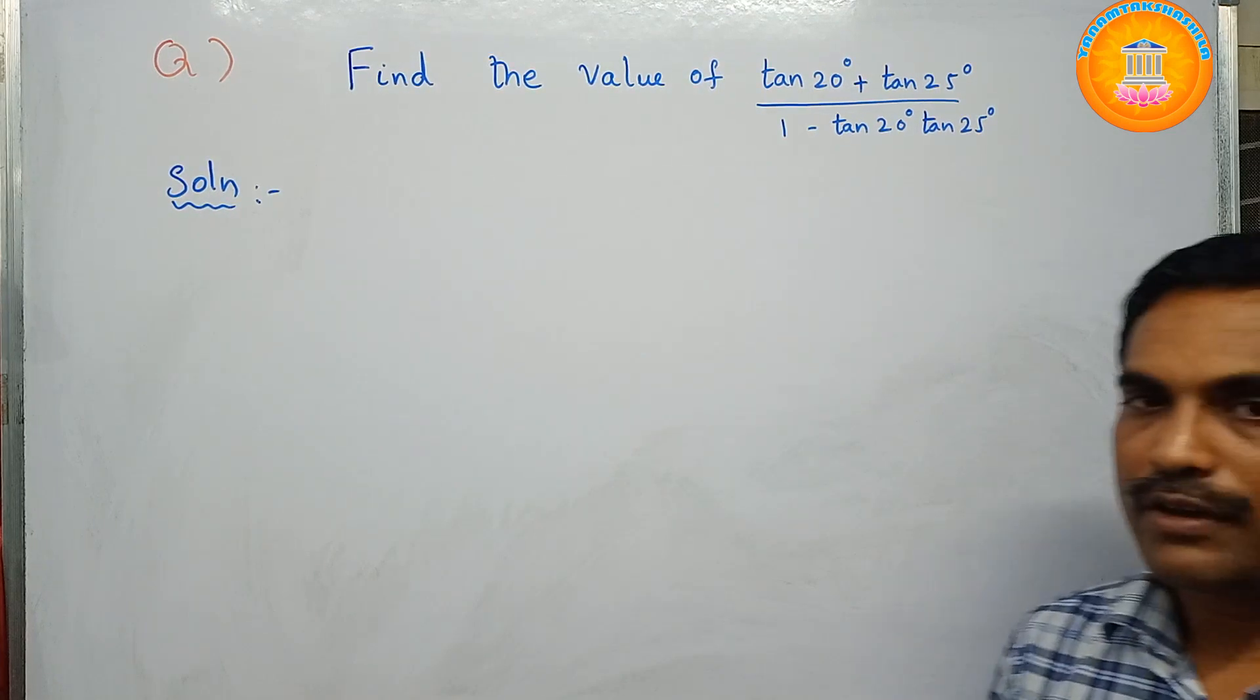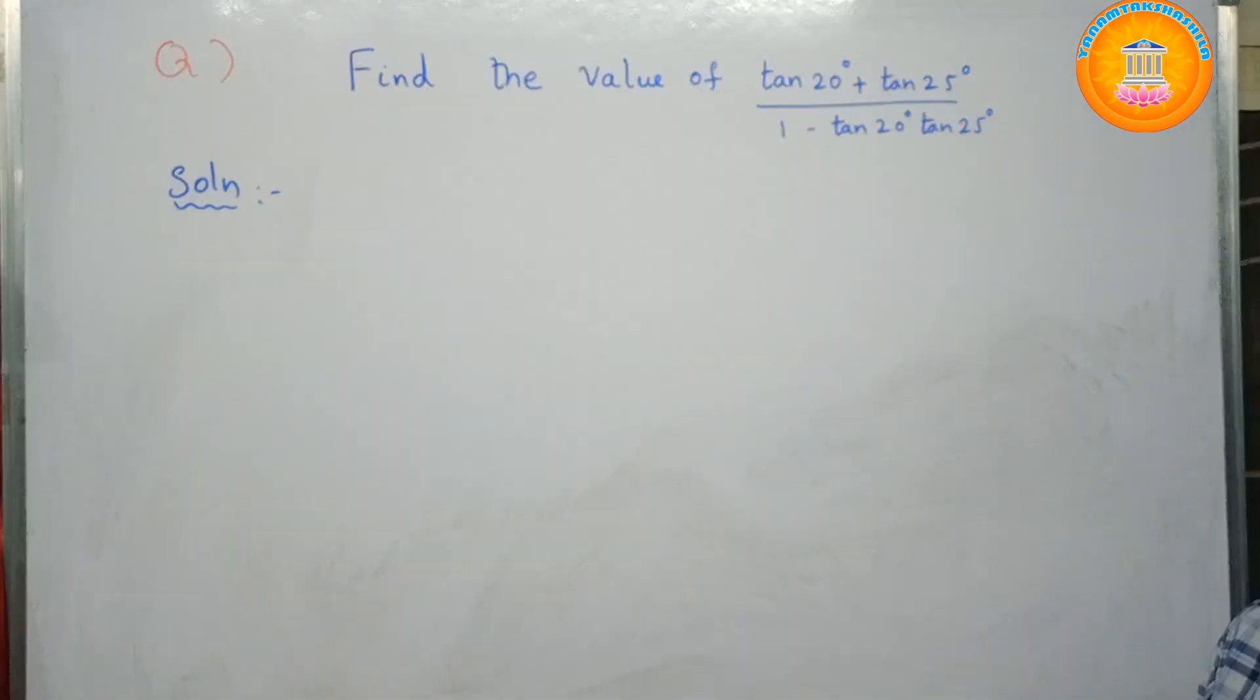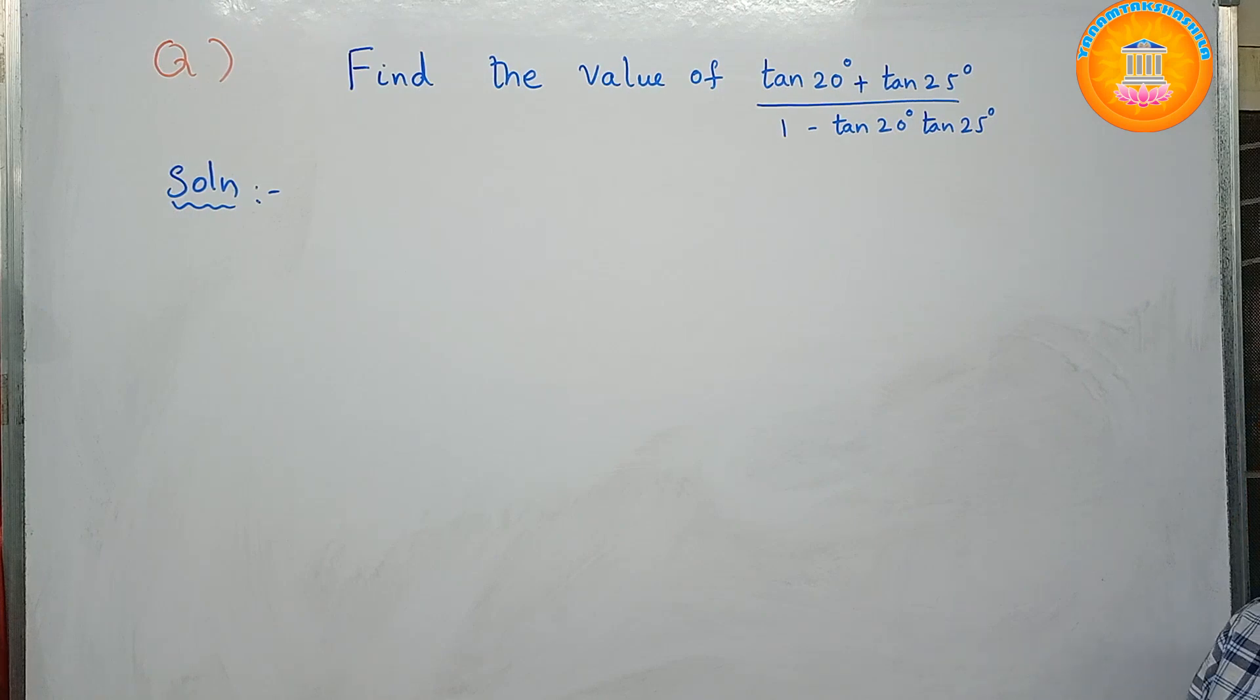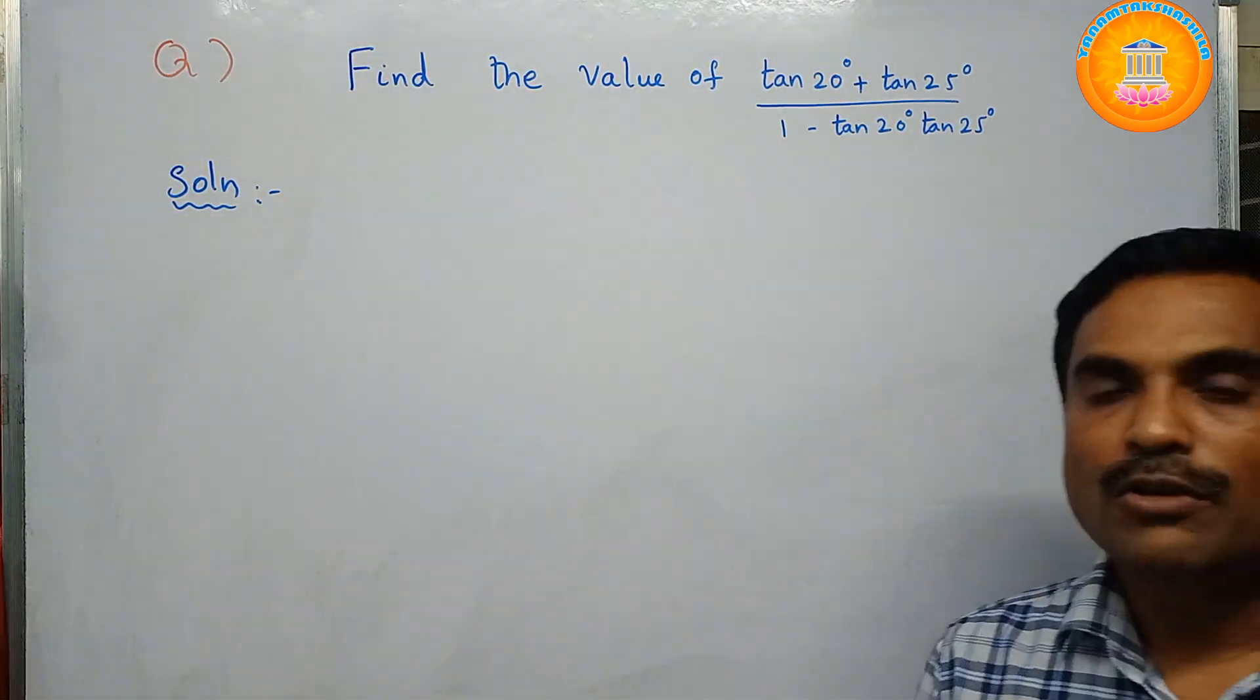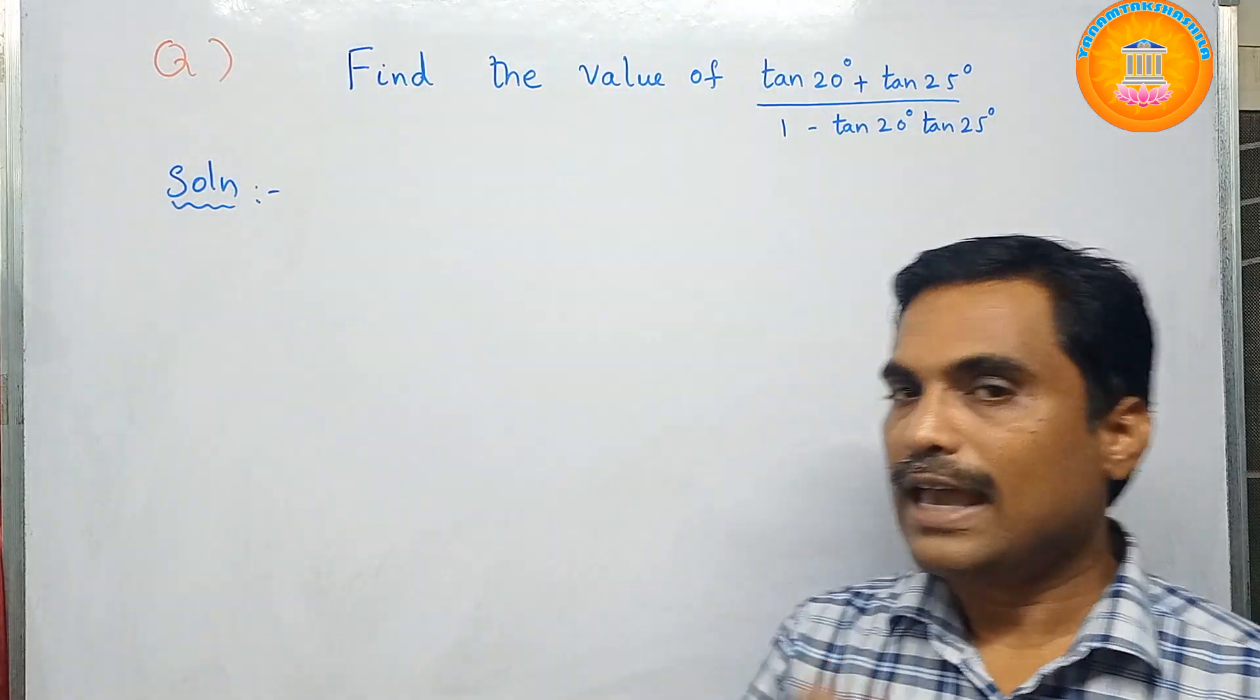Now if you observe this problem, this is of the form tan A plus tan B divided by 1 minus tan A tan B. So you have to use the trigonometry formula of tan of A plus B to get the solution here.